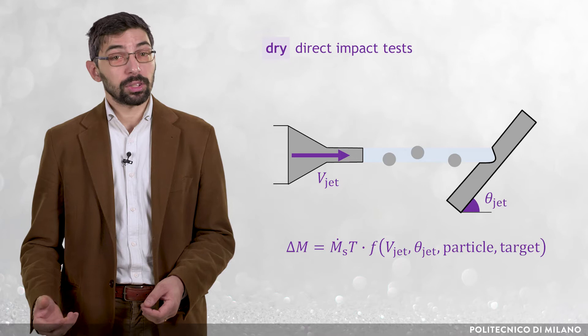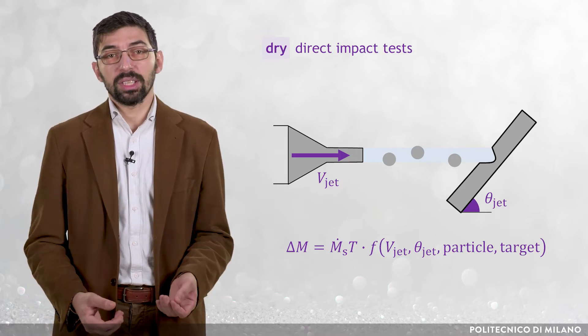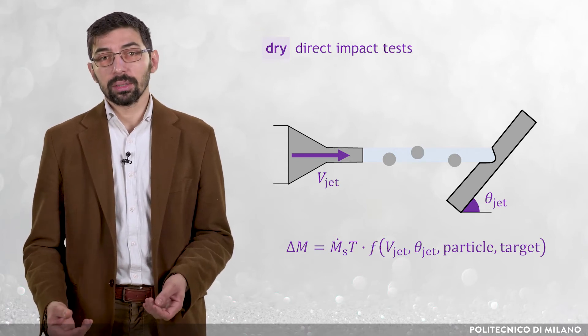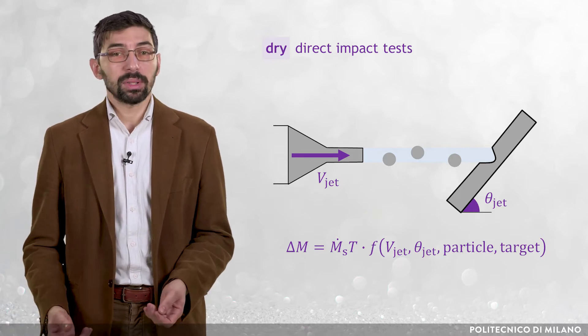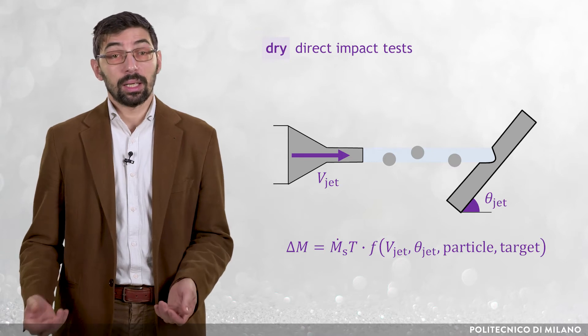...the jet-bulking velocity, vjet, the specimen inclination angle, theta jet, some properties related with the particles, such as size, shape, and hardness, and some properties related with the target material, such as density and hardness.